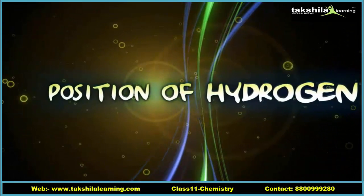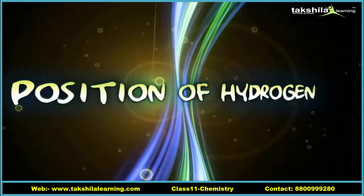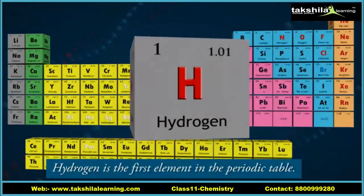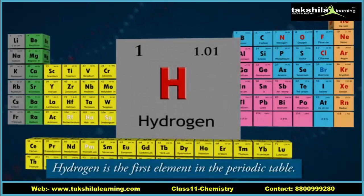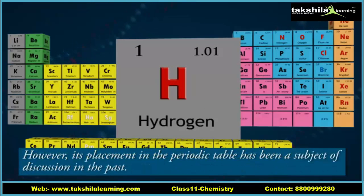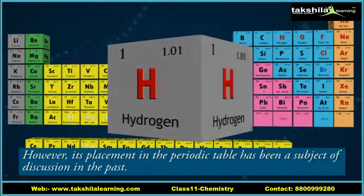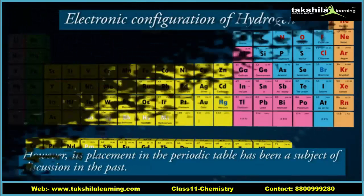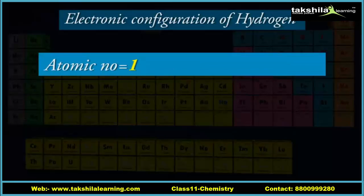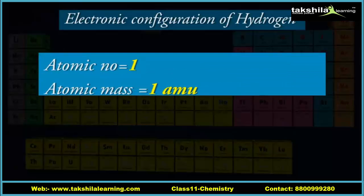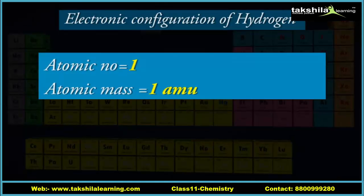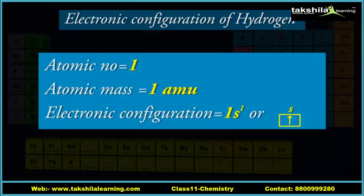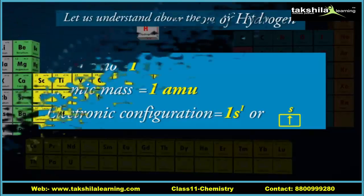Hydrogen is the first element in the periodic table. However, its placement in the periodic table has been a subject of discussion. Hydrogen's atomic number is 1, atomic mass is 1 amu, and its electronic configuration is 1s¹ (box configuration).